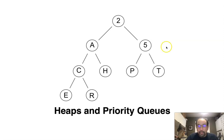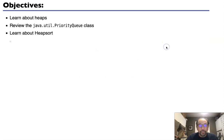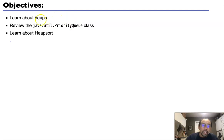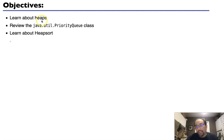Today we're going to be looking at heaps and priority queues. The objective is we're going to learn what is a heap, we're going to learn about the Java collection framework class called the priority queue, which is made using heaps, and we're also going to be looking at another kind of sorting algorithm called heap sort that uses the idea of heaps underneath.